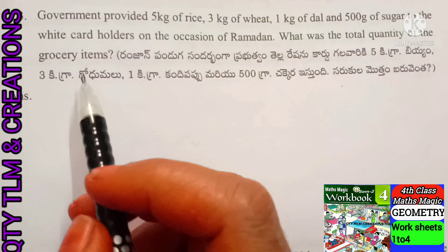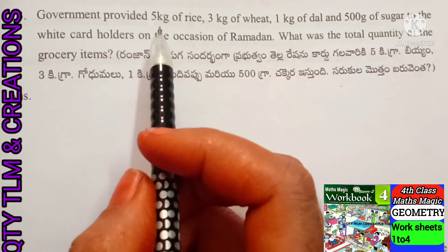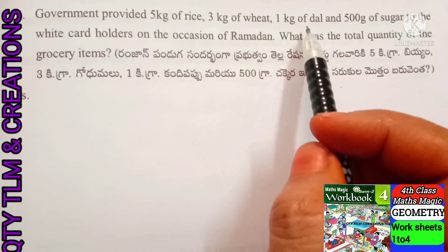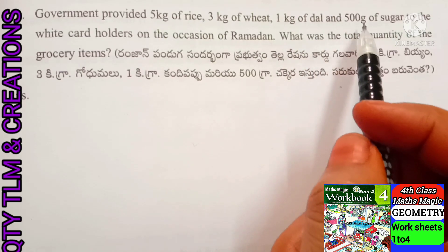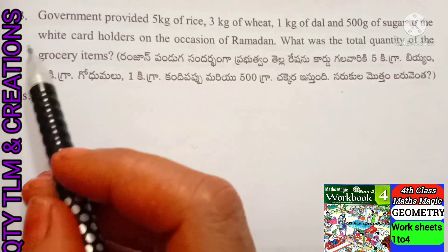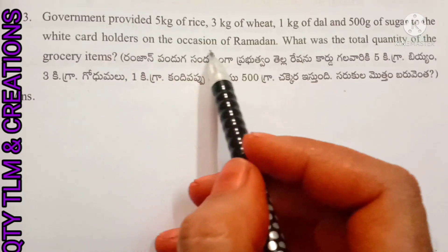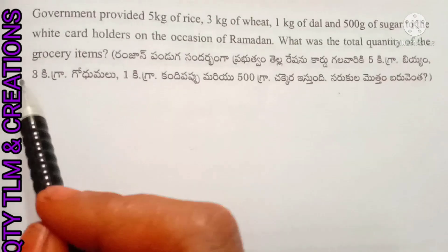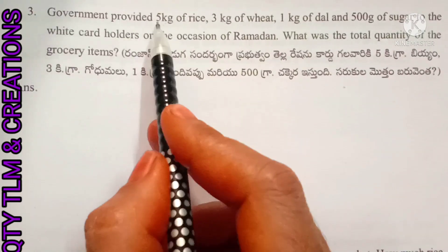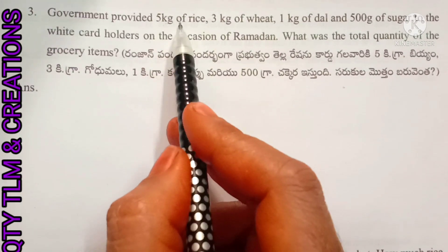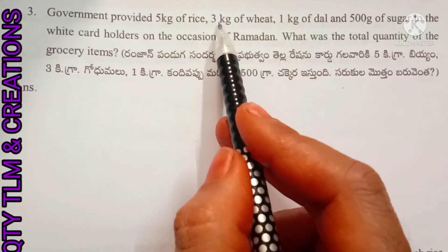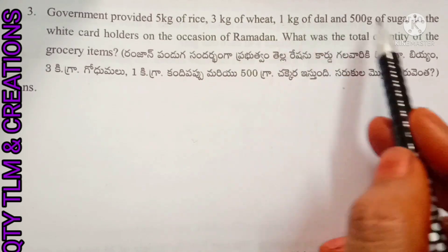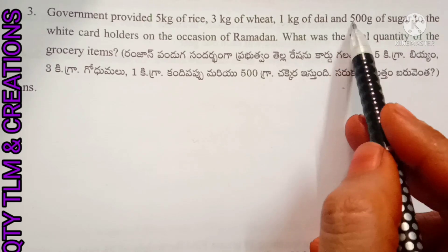Next question: the government provided 5 kilos of rice, 3 kilos of wheat, 1 kilo of dal, and 500 grams of sugar to white card holders on the occasion of Ramadan. What was the total quantity of the grocery items? Weight of rice: 5 kilograms; weight of wheat: 3 kilograms; weight of dal: 1 kilogram; weight of sugar: 500 grams.